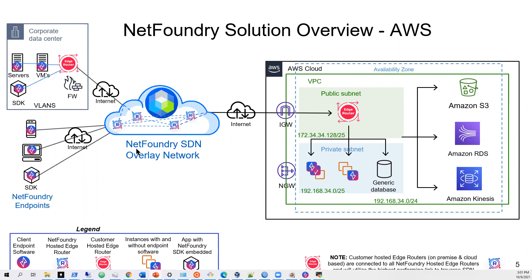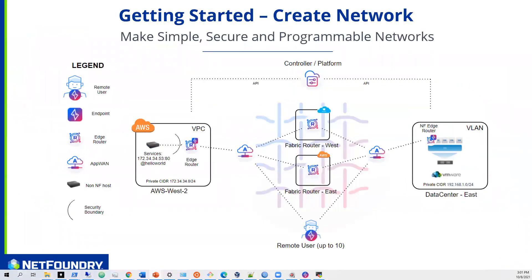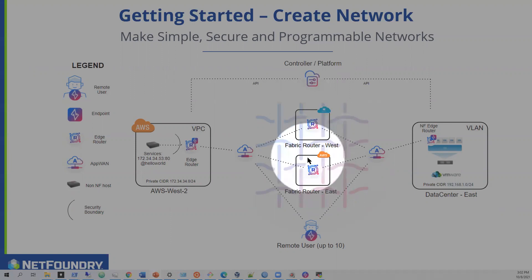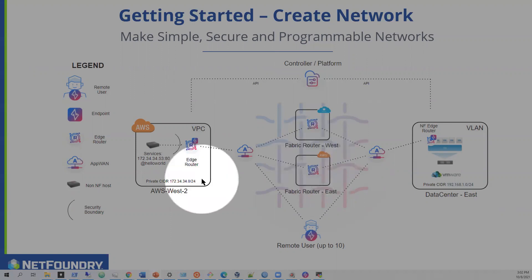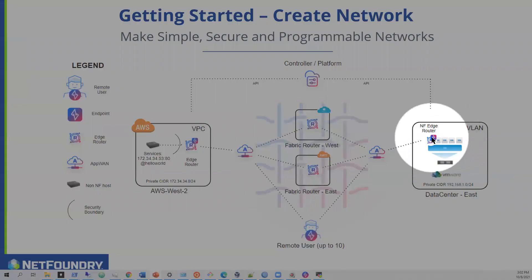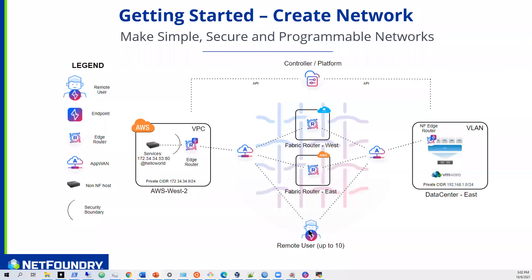So we're going to put something together like this, a little bit smaller. We're going to build the platform, build some fabric routers in the middle that usually act as the transit. We'll build our edge router in the AWS cloud, then build one in a VMware environment, install the client on a Windows 10 machine, and then set up services to access web pages within these networks.